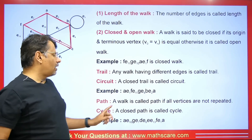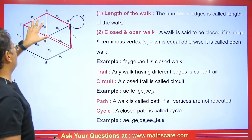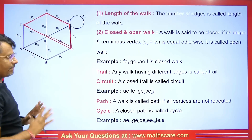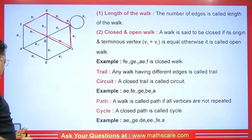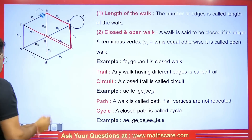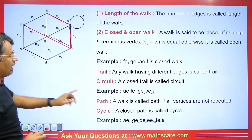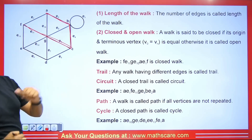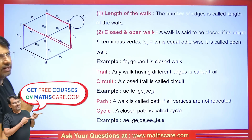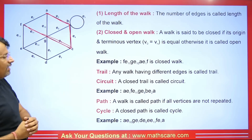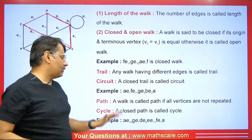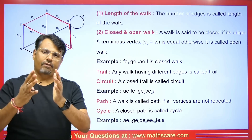Now let's talk about cycle. A closed path is called a cycle. We go here, then here, then here, and come back — it is closed, so this is a cycle. If we remove the closing edge, it becomes a path but not a cycle, because it is not closed. To make a cycle, we need to return to the starting point with no vertex repetition in between.